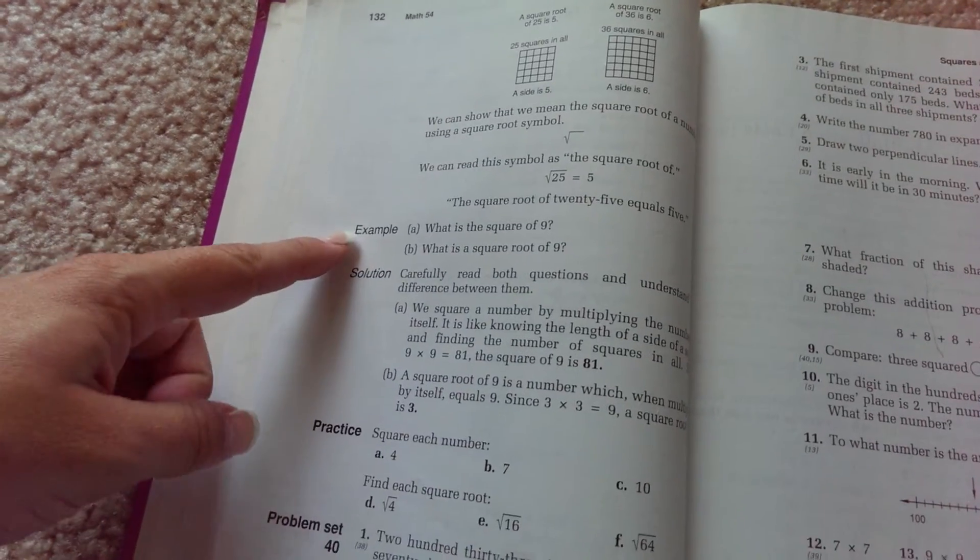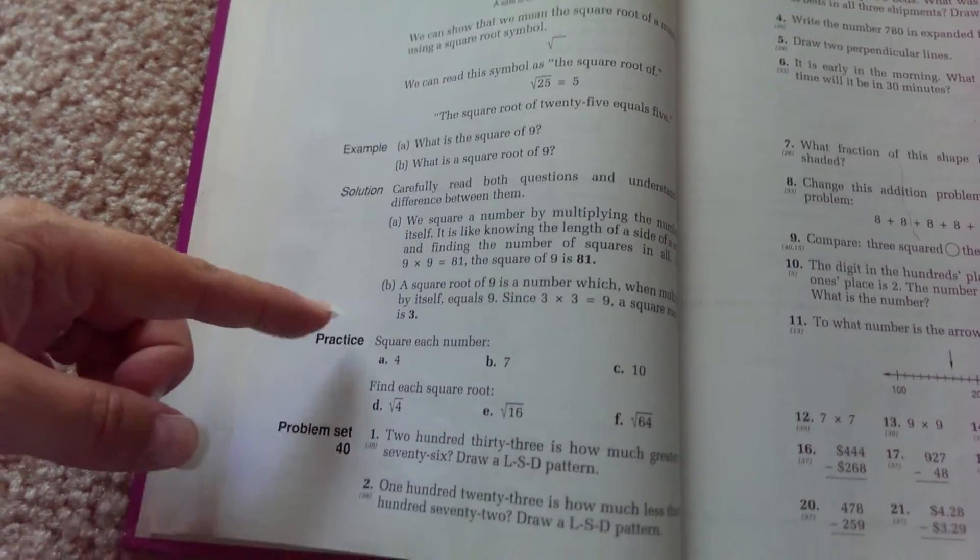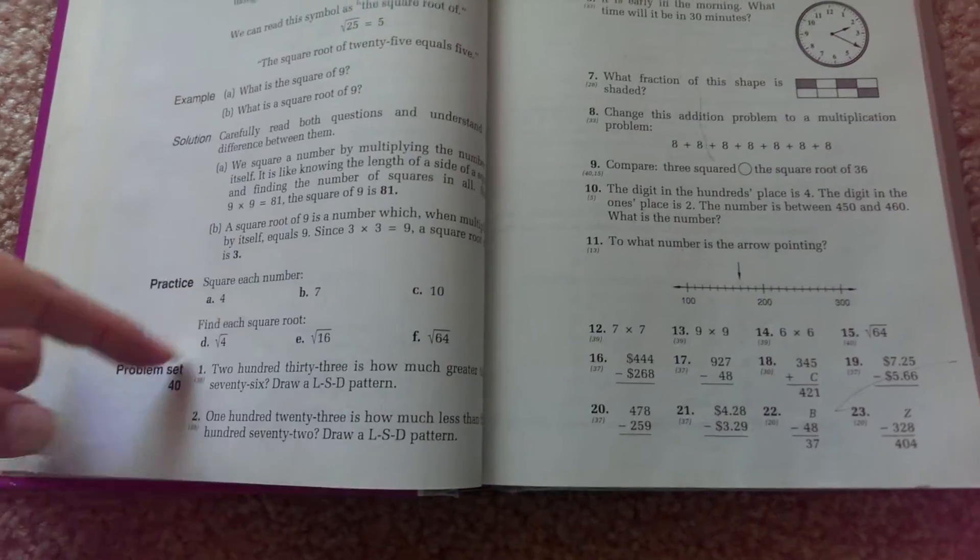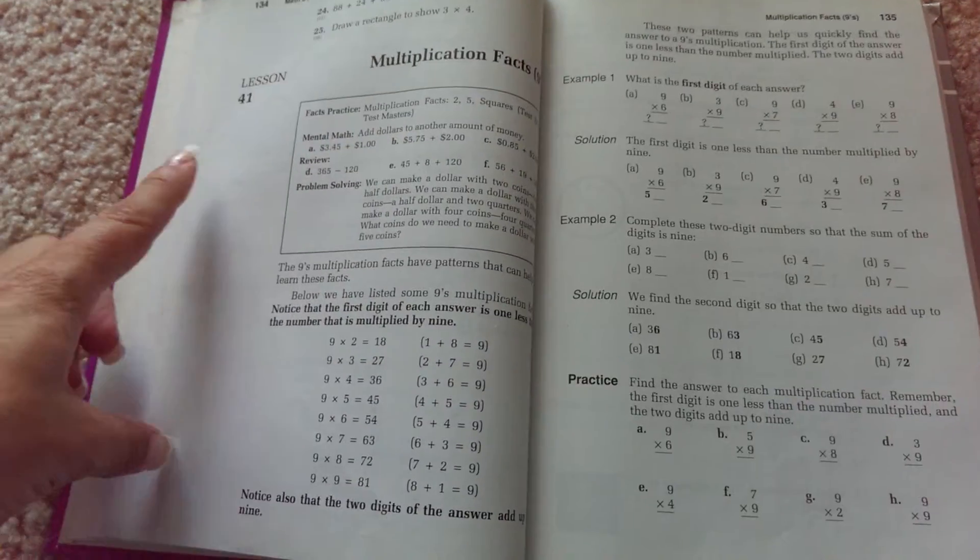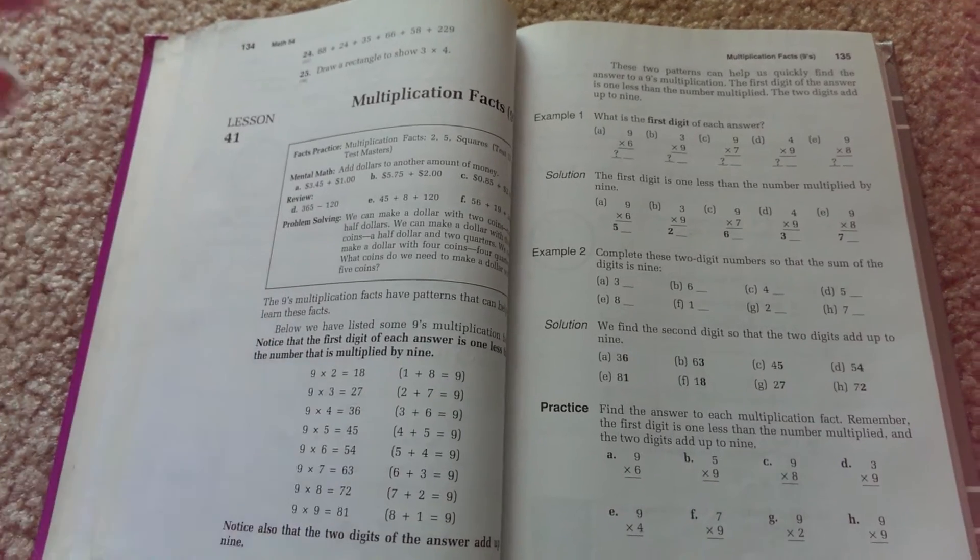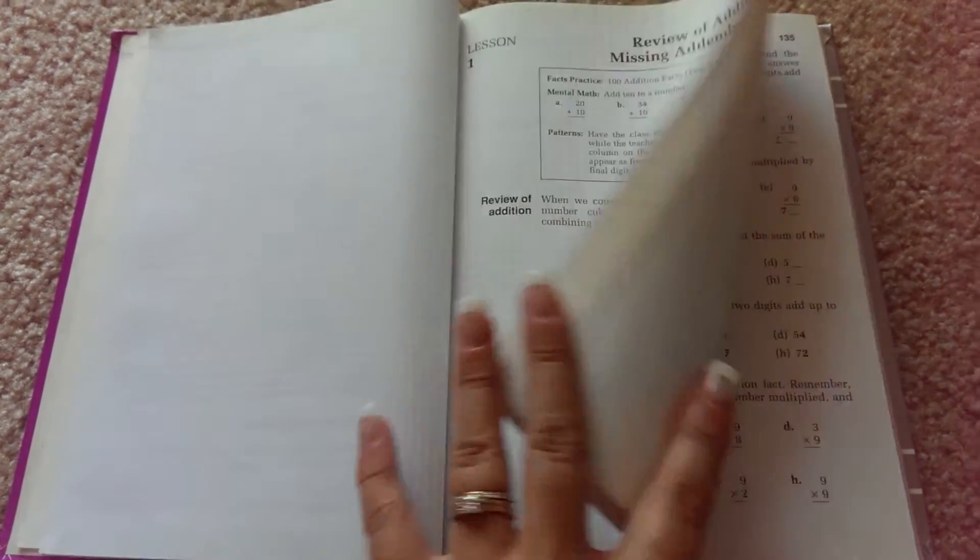I don't know what lesson 40 is in the first edition. And there's an example, solution, practice, the problem set, and then it goes on to lesson 41. So I don't know how really this is different from the first edition other than maybe a different order or some added things in.